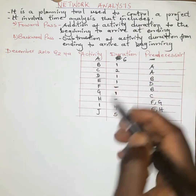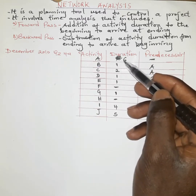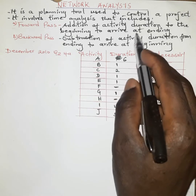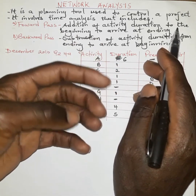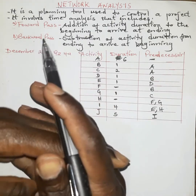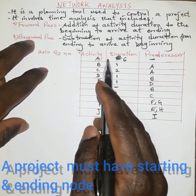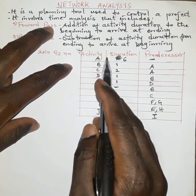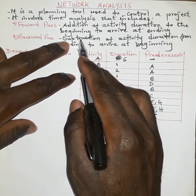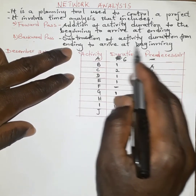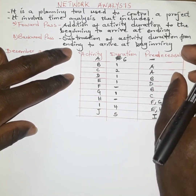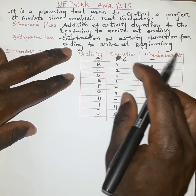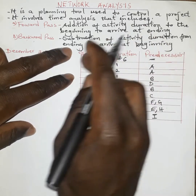For these particular activities, we are given their durations, and we will add the duration of each activity to their starting nodes in order to arrive at the ending nodes. A project will normally have two types of nodes — the starting node and the ending node. After that, we will do the backward pass, which is the reverse of the forward pass, involving the subtraction of activity duration from the ending to arrive at the beginning. After achieving the ending node, we work backwards, subtracting the duration from the ending to arrive at the beginning.